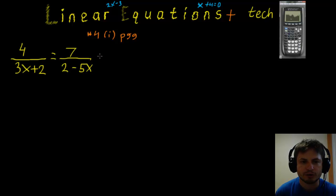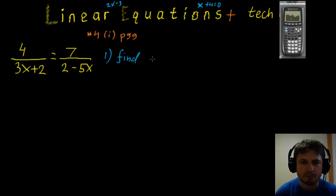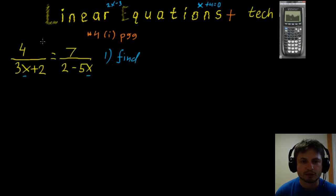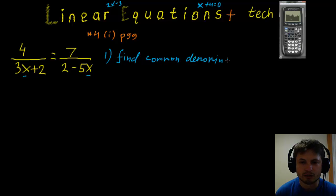Let's do this manually first, and then I'll show you how to do it on the GDC. Step one is to find the common denominator — we need to make these two expressions share a common denominator so we can solve for x.